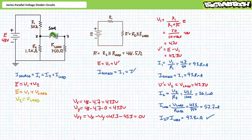Ideal switches are zero ohm elements; as a result, no voltage will be dropped across the switch. As a means of checking our work, voltage at node X with respect to ground equals the rise of 48 minus the drop of 4.7 volts, or 43.3 volts. Similarly, voltage at node Y with respect to ground is 48 volts minus 4.7 volts minus the zero volt drop across the switch, for a total of 43.3 volts. Voltage at X with respect to Y, where both are at 43.3 volts, demonstrates a zero volt differential.